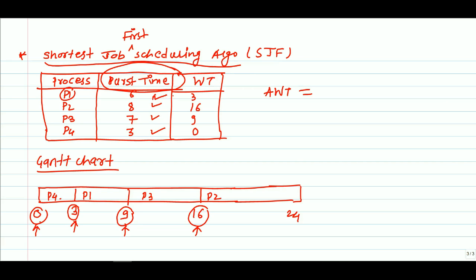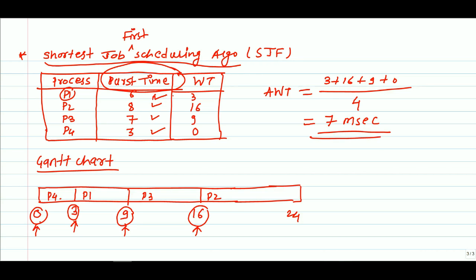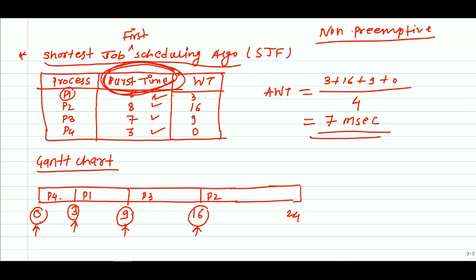The average waiting time is calculated by adding all waiting times — 3 + 16 + 9 + 0 — divided by the total number of processes, which is 4. The approach used here is non-preemptive: once a particular process is submitted to the CPU for execution, it is not interrupted. It is completely executed before another process is taken up.